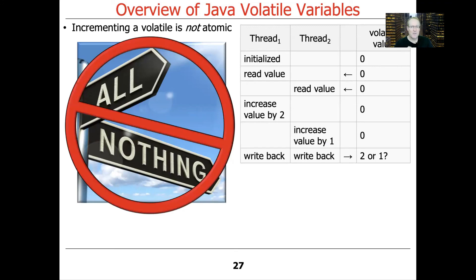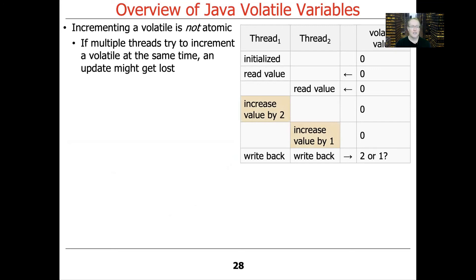It's very important to remember: volatile really deals with reads and writes to single variables. Incrementing a volatile variable is not an atomic operation — it involves multiple steps, so there are no guarantees for those steps. If multiple threads try to increment a volatile at the same time, an update might get lost. Even though the reads and writes are atomic, incrementing is not atomic, so you don't know whether you'll end up with a value of two or one — there are no guarantees.